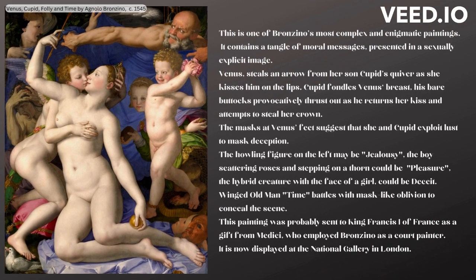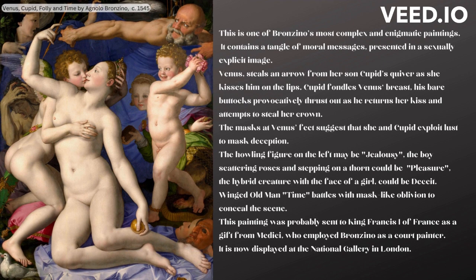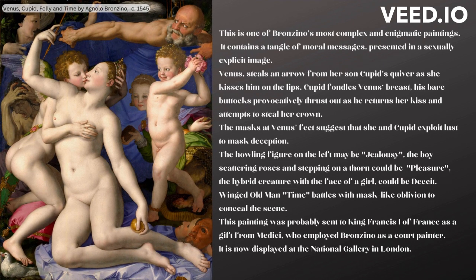This is one of Bronzino's most complex and enigmatic paintings, containing a tangle of moral messages presented in a sexually explicit image. Venus steals an arrow from her son Cupid's quiver as she kisses him on the lips, while Cupid fondles Venus's breast, his bare buttocks provocatively thrust out as he returns her kiss and attempts to steal her crown. The masks at Venus's feet suggest that she and Cupid exploit lust to mask deception. The howling figure on the left may be jealousy, the boy scattering roses and stepping on a thorn could be pleasure, and the hybrid creature with the face of a girl could be deceit. Winged old man Time battles with mask-like oblivion to conceal the scene. This painting was probably sent to King Francis I of France as a gift from Medici, who employed Bronzino as a court painter. It is now displayed at the National Gallery in London.